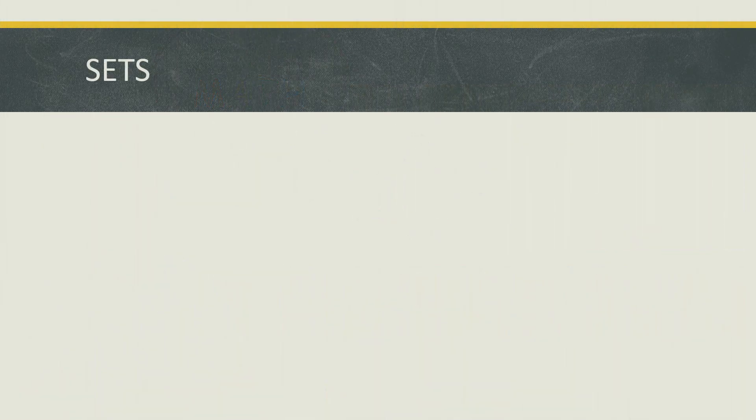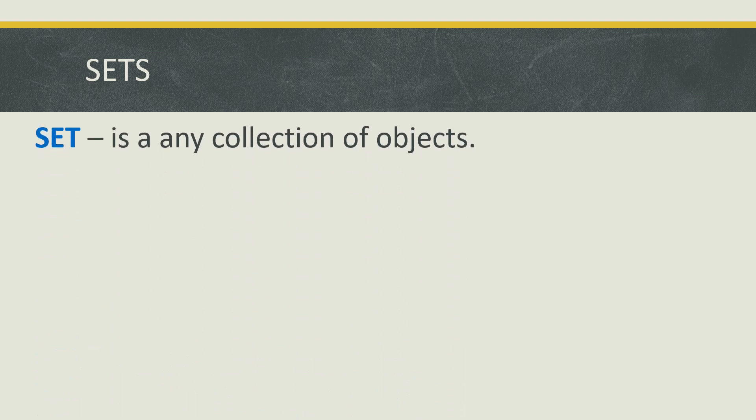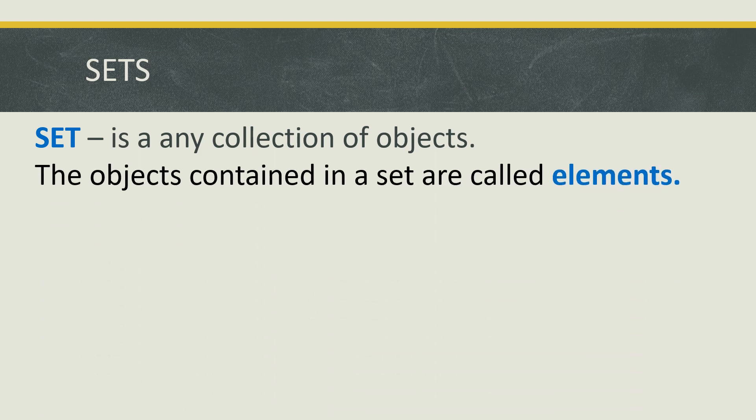Before we discuss the Venn Diagram, let us review what a set is. A set is any collection of objects — a well-defined object to be exact. The objects contained in a set are called elements. For example, set A has the elements 1, 2, 3, 4, and 5.